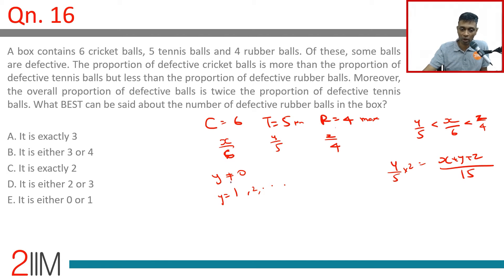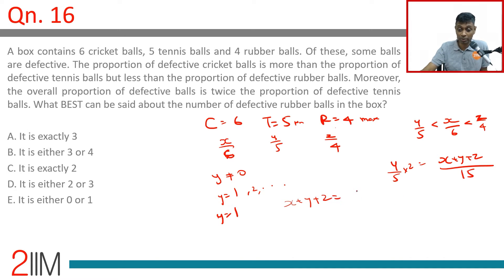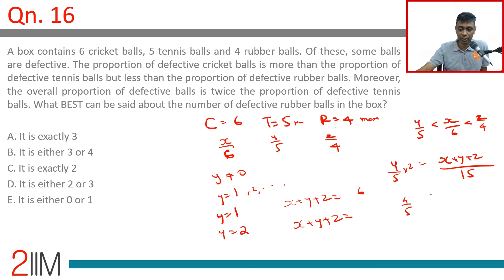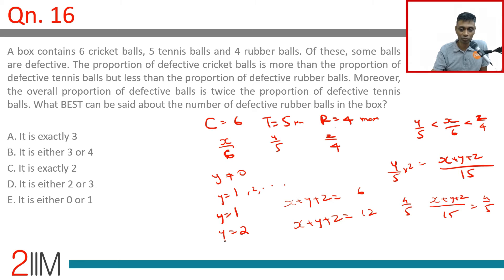If y = 1, then 2(1/5) = 2/5, so x + y + z = 6. If y = 2, then 2(2/5) = 4/5, so x + y + z = 12. If y were 3, twice that would be 6/5, which is not possible. So y is either 1 or 2.